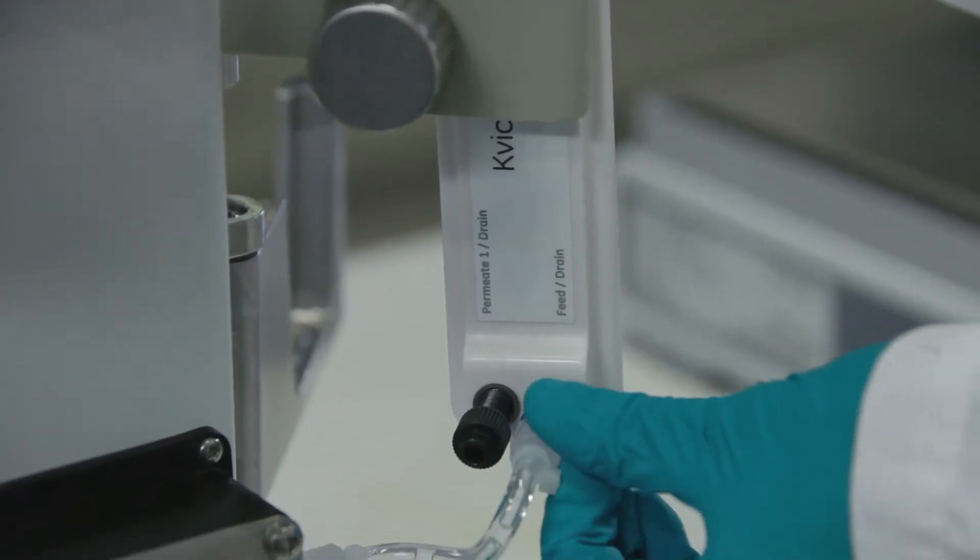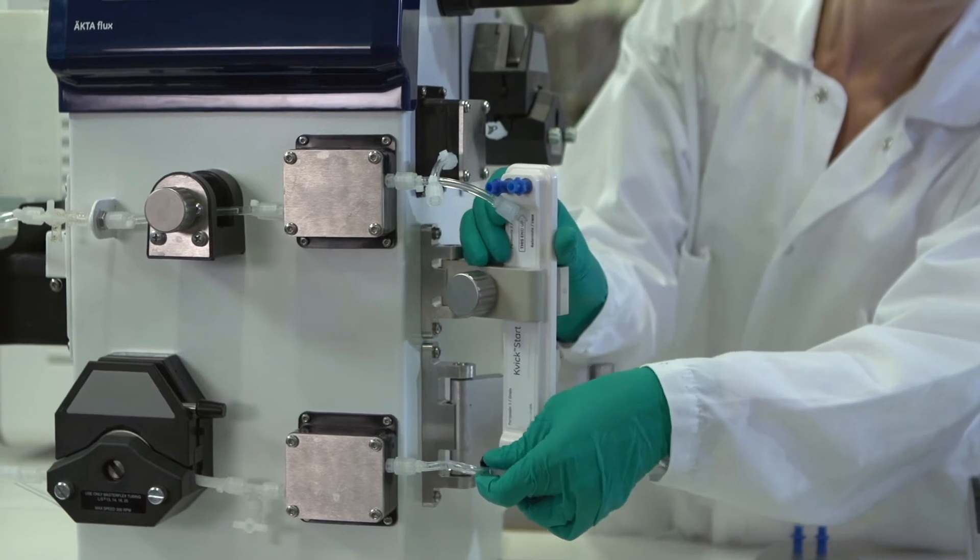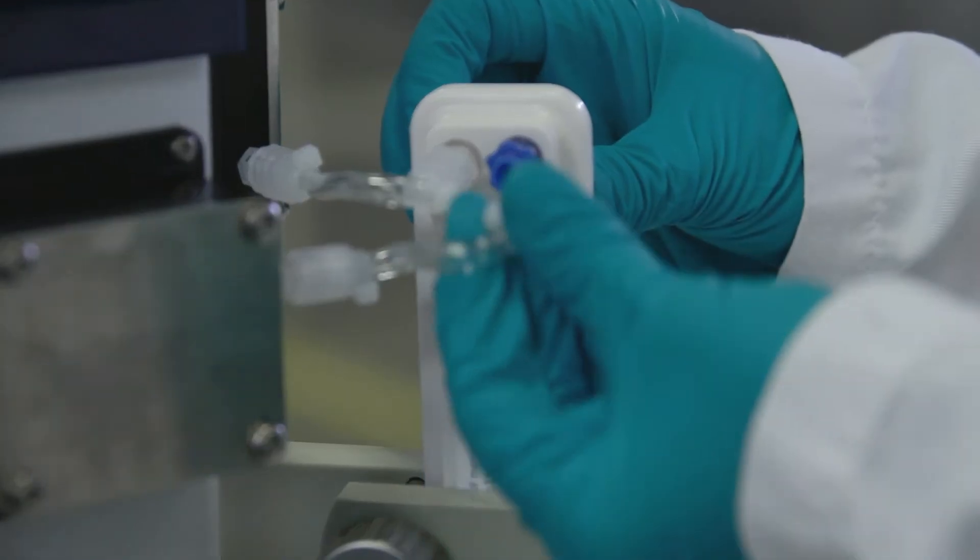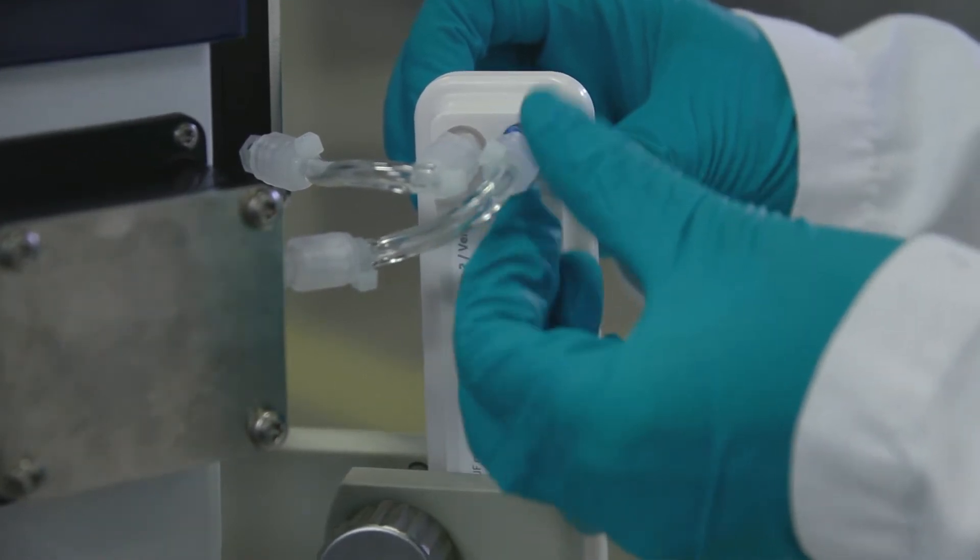For ultrafiltration, choose suitable tubing and recalibrate the feed pump. Attach the filter cassette to the system. Connect tubing to the system and to the filter.